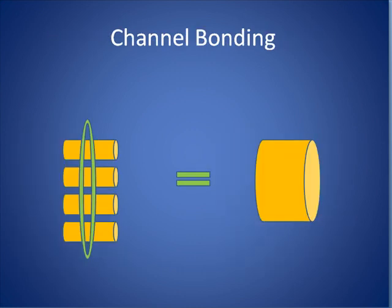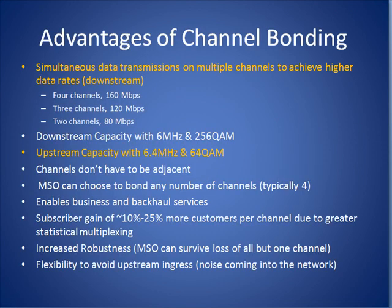Channel bonding refers to the use of multiple frequencies together to form a single fat pipe. In a DOCSIS 3.0 system, because of the inherent nature of the cable company's architecture, channel bonding and dynamic frequency allocation are both much easier to do in the downstream direction than in the upstream direction. The main advantages of channel bonding allow for much greater increases in speed in both the upstream and the downstream direction.